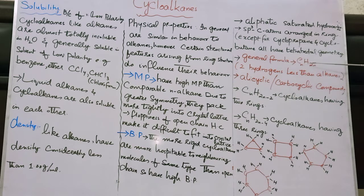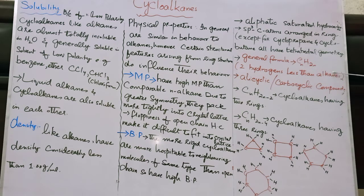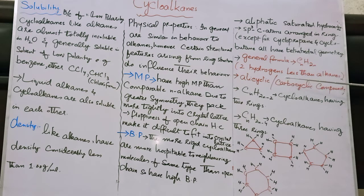The general formula for cycloalkanes is CnH2n. This formula reflects that there are two fewer hydrogens compared to alkanes. We call cycloalkanes alicyclic hydrocarbons.